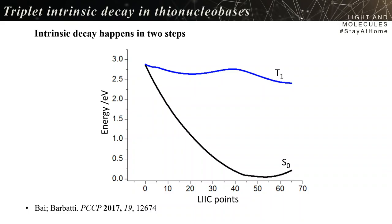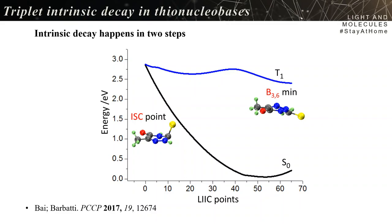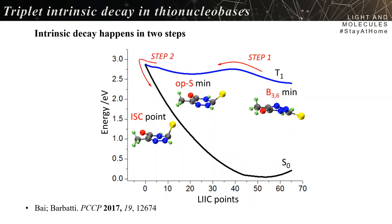Look at this picture: it shows the intrinsic decay of the triplet. The triplet is the blue curve, and it has two minima and an intersystem crossing point where the triplet crosses the singlet. The first minimum has a boat geometry with out-of-plane distortion of the ring. The second minimum has the thiocarbonyl group out of plane. From the lowest minimum, there's a first step that populates the second minimum, and from there a second step to the intersystem crossing itself.